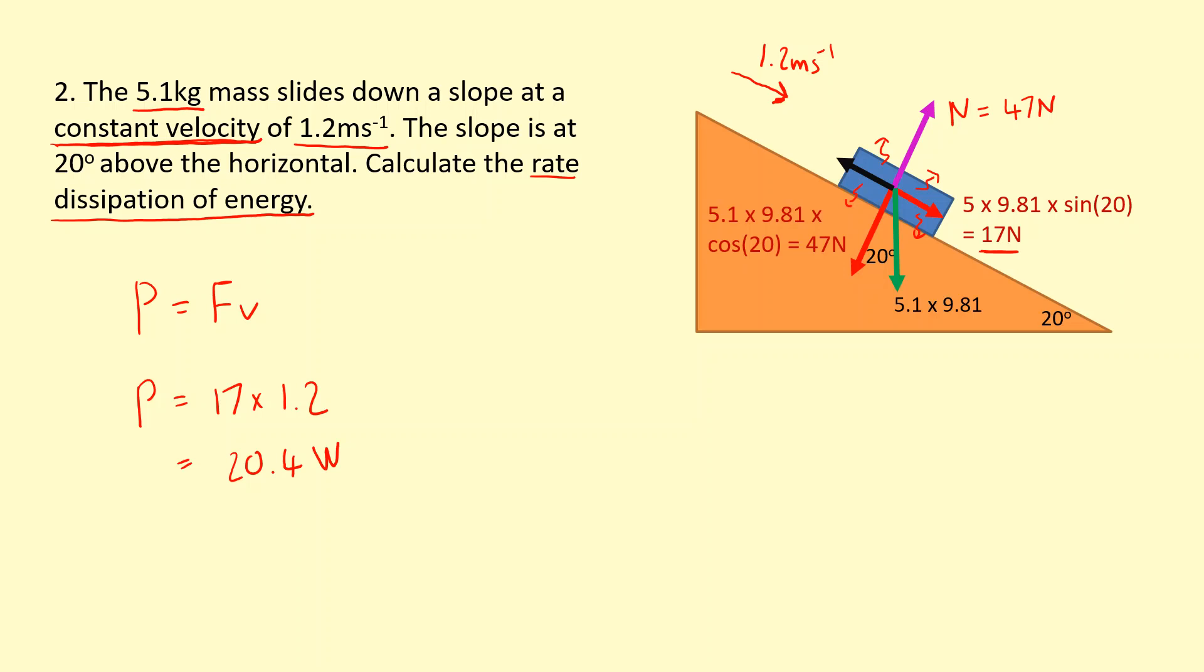Where is this energy coming from? It's coming from the gravitational potential energy. So at the top, it would have a gravitational potential energy. However, all of this is being dissipated as it goes down the slope at constant speed.